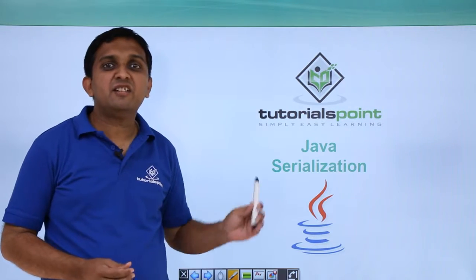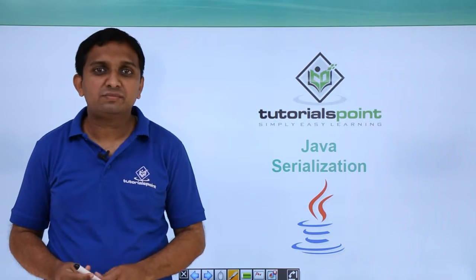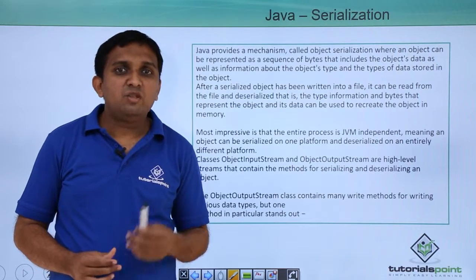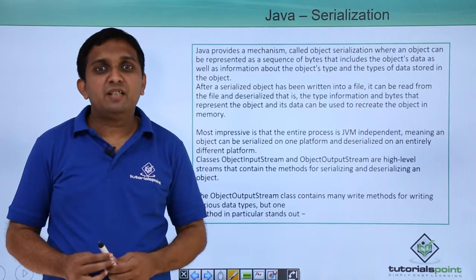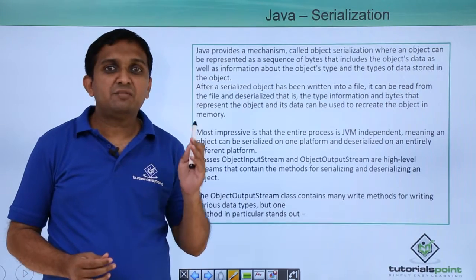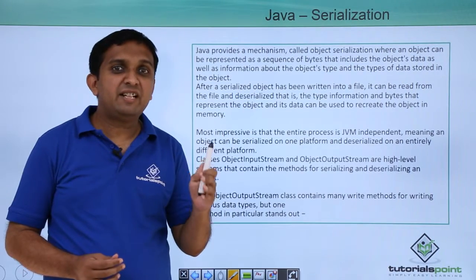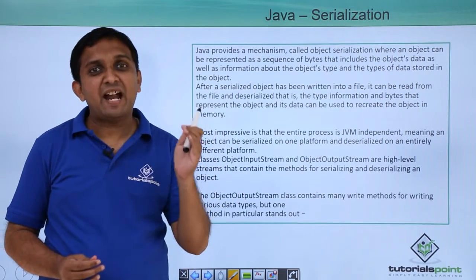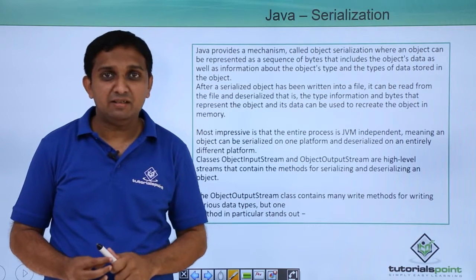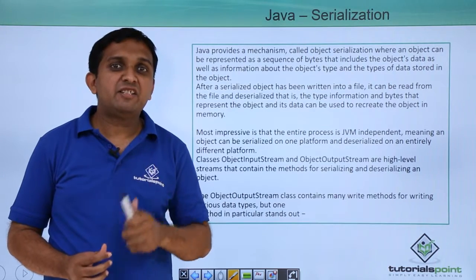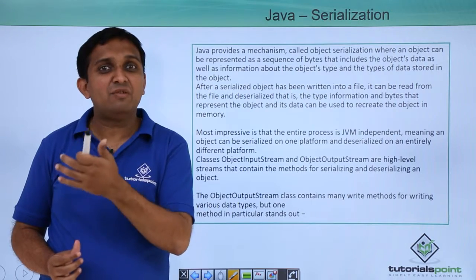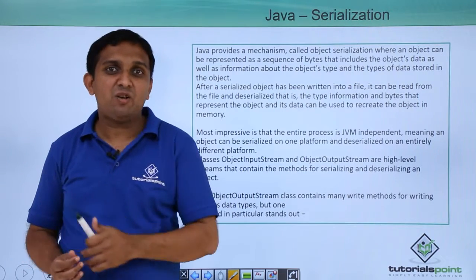Hello guys, we will see Serialization in Java. There are two terms basically: one is Serialization, the other is Deserialization. Serialization means converting an object into bytes and writing those bytes into some file. Deserialization is reading the bytes from the file and converting those bytes back into the object.